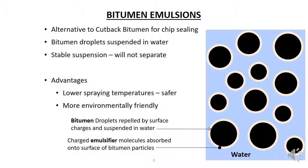So, how do emulsifiers work? The emulsifier molecules have a surface charge. These surface charges are electrical charges on the surface of the particle, and can be positive or negative. This surface charge results in bitumen droplets repelling each other, so they do not coalesce into a large bitumen mass that can settle out in the water. The idea of surface charges is not something we see in everyday life, as it only happens in very small particles.